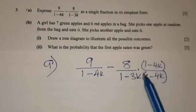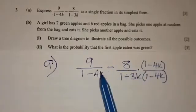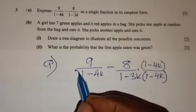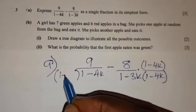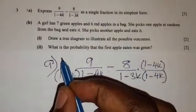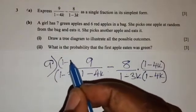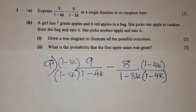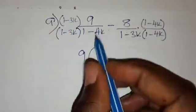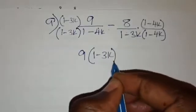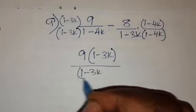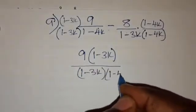We also multiply this denominator by the denominator of the second fraction, giving us (1 minus 3K). Again, what we have done on the denominator, we also do on the numerator: (1 minus 3K). So we will have 9 times (1 minus 3K) over (1 minus 3K)(1 minus 4K).